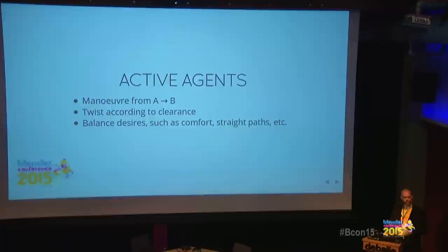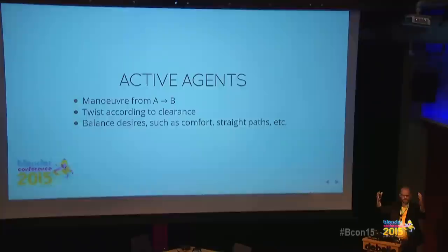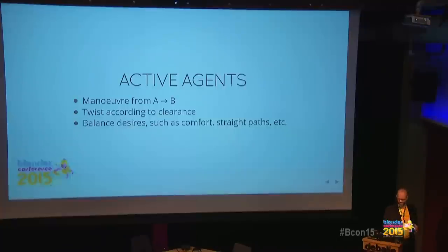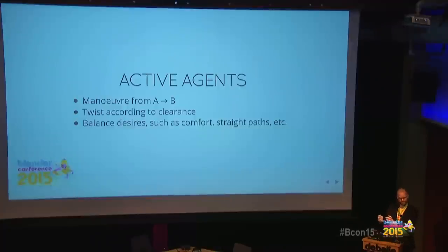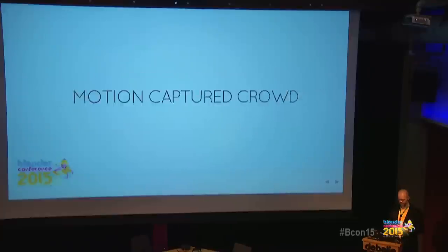Active agents go from A to B and take clearance into account. As soon as it's spacious enough they can walk straight through a gap, but if people are more crowded they start to rotate and try to squeeze through. They find a path through the crowd that balances a nice straight line to the goal, possibly going around really dense parts.